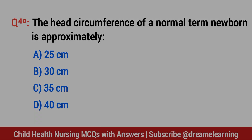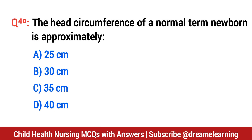Question number 40. The head circumference of a normal term newborn is approximately? The right option is C: 35 cm.